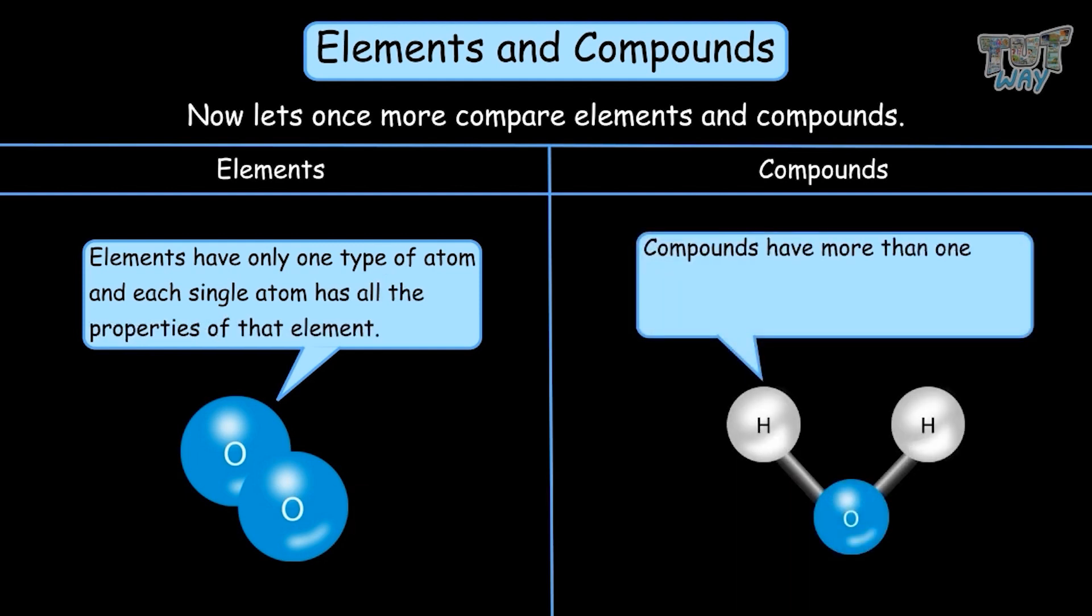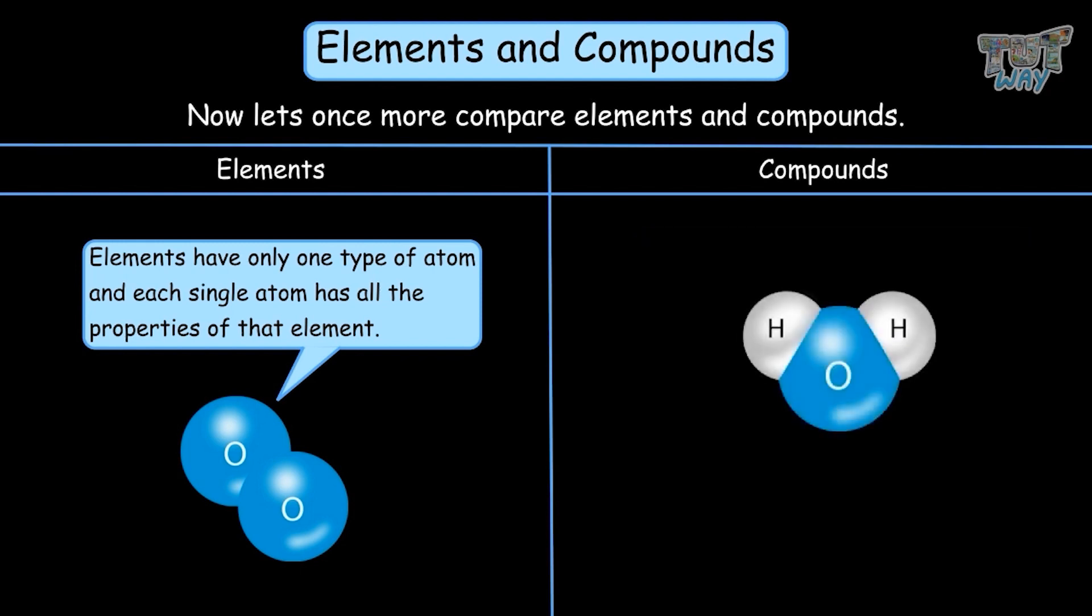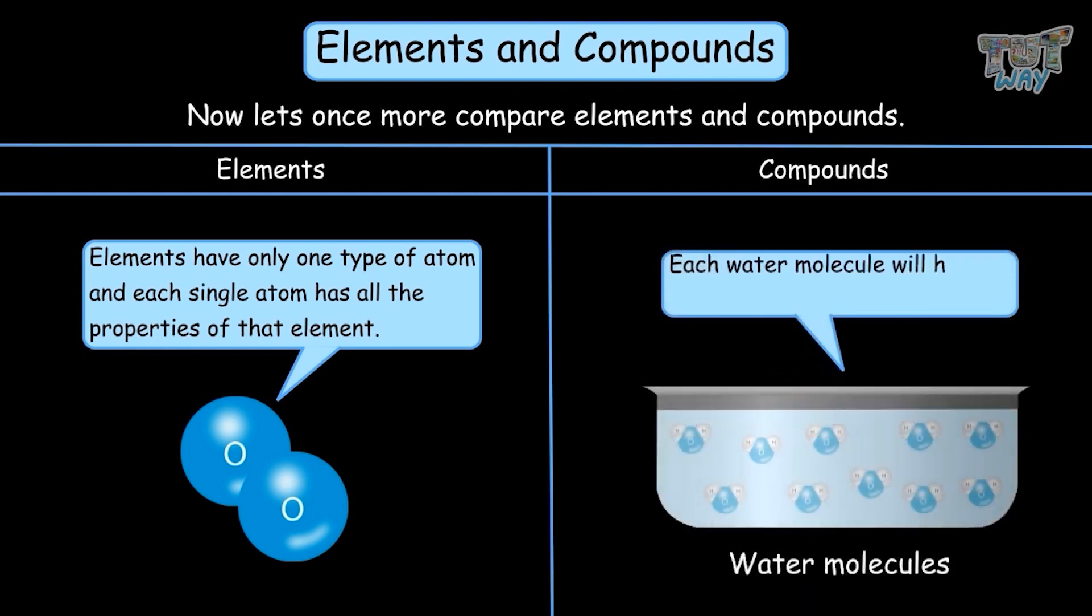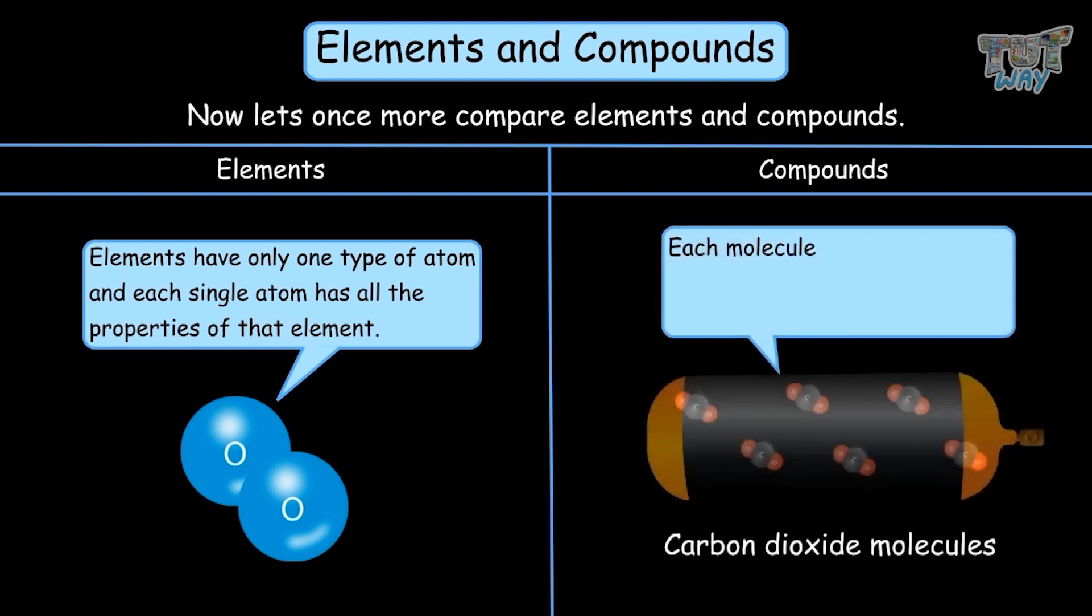Compounds have more than one type of atom bonded together in a fixed ratio in every molecule. Each molecule of a compound possesses all the properties of that compound, like water molecules. Each water molecule will have all the properties of water. Each molecule of carbon dioxide will have all the properties of carbon dioxide.